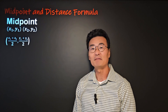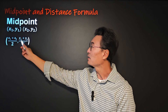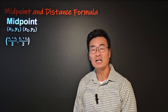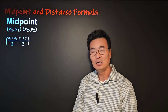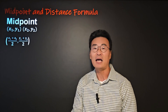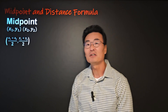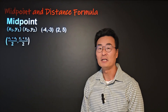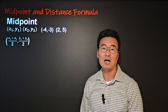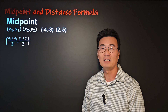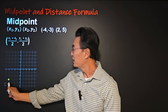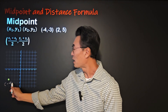We take the average, which gives us the halfway point, and also add y1 and y2 and then divide by 2 again to find the average or the halfway point. If we're given an example such as negative 4 comma negative 3 and 2 comma 5, let's go ahead and plot these two points.